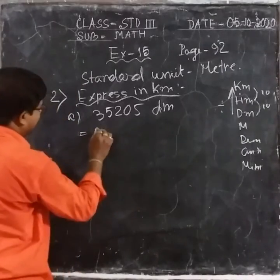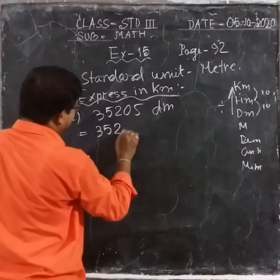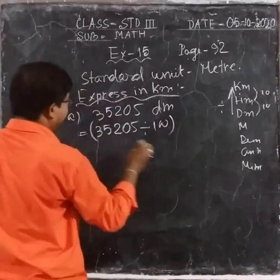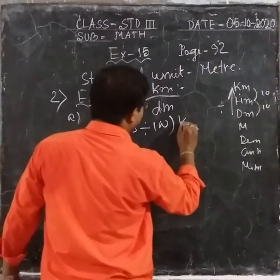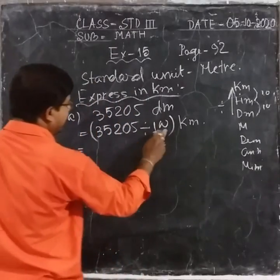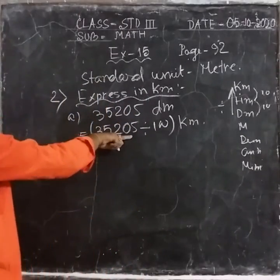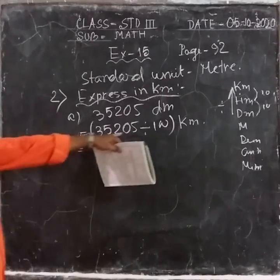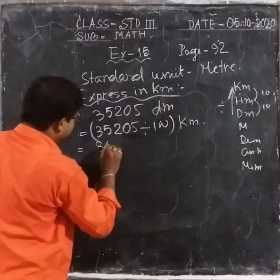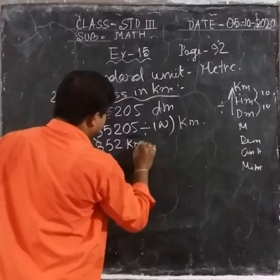You have to divide 35205 by 100. Divide by 100, which converts it into Kilometers. Here I have 2 zeros, so you move the decimal point 2 digits to the left. That means 3, 5, 2.